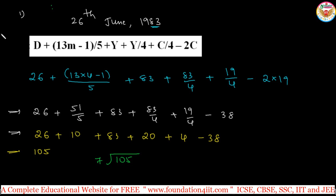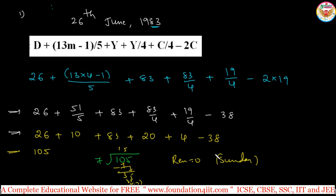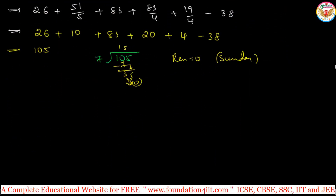Divide 105 by 7. We only need the remainder. 7×15 = 105, so the remainder is 0. Since remainder equals 0, the day is Sunday. Remember, we work with the remainder, not the quotient, and the remainder is always between 0 and 6. So 26th June 1983 is a Sunday.